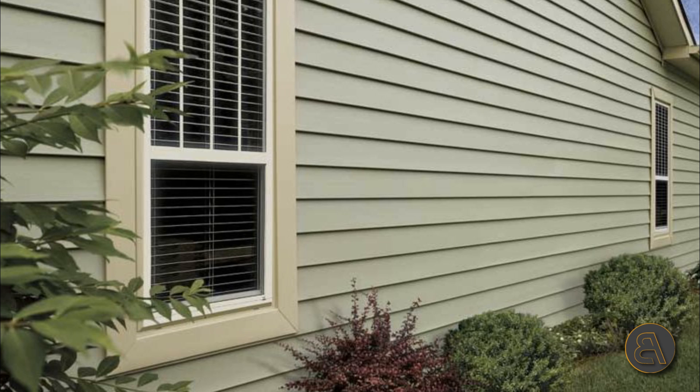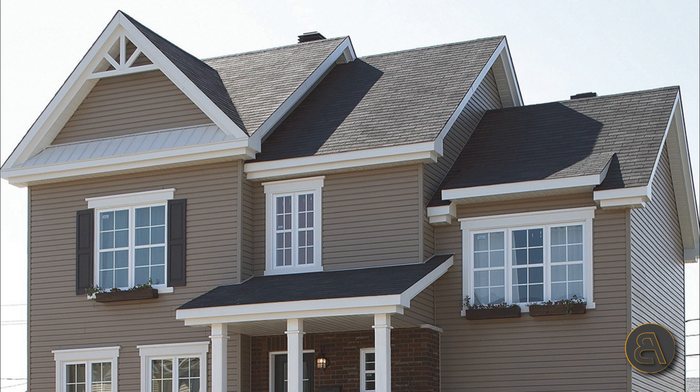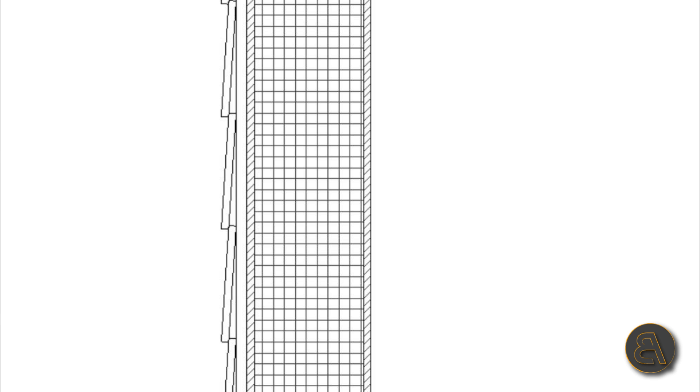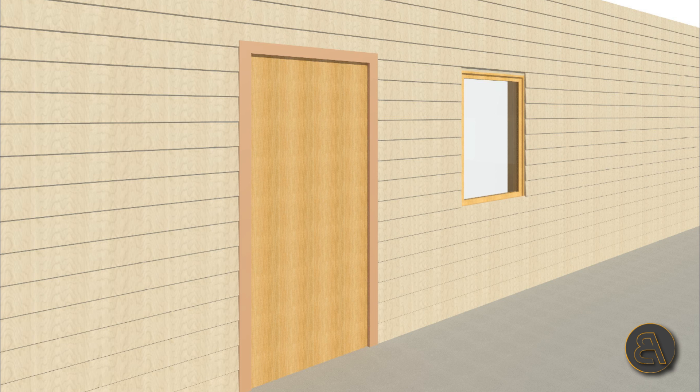Hey guys, Balkan Architect here, and today I'm going to be doing a tutorial on creating siding in Revit. Siding is basically the little wood on the facade of the building — today it's more commonly made out of some composite or synthetic material, but originally it was done using wood. It's a type of facade finish, and I think it's most common in the USA.